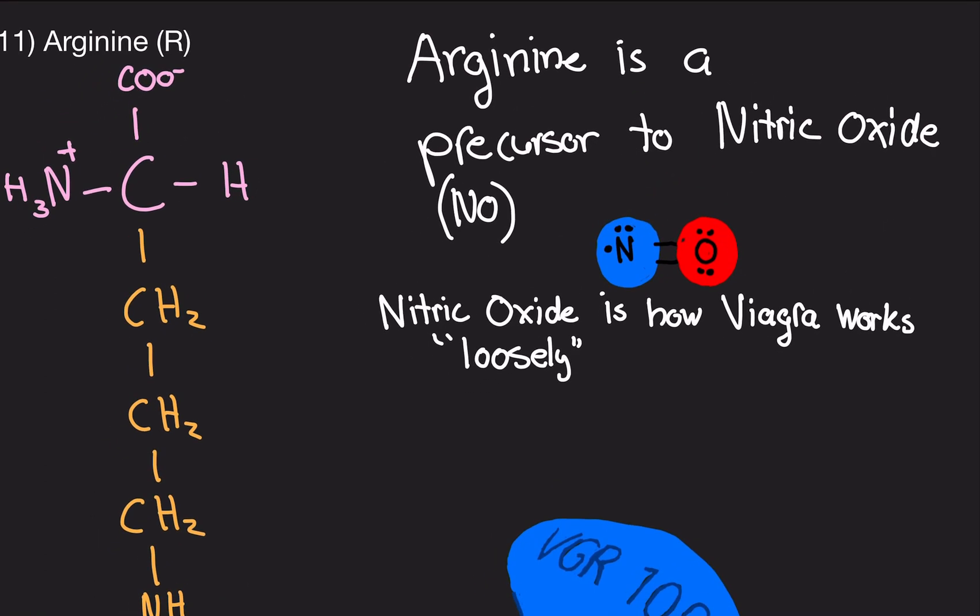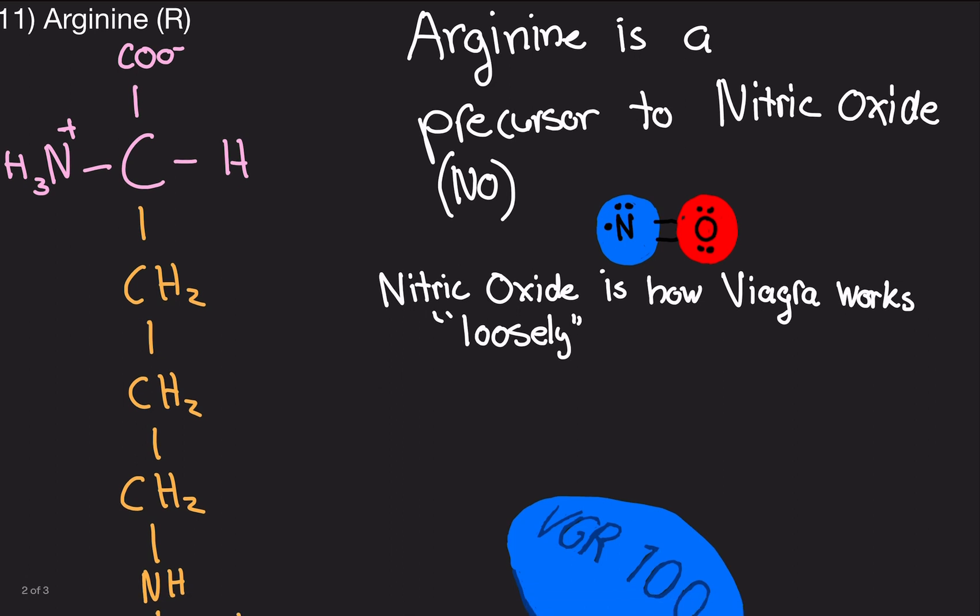So why are we talking about arginine? This is the whole Viagra thing I want to talk about. Let's back up for a second. There's something in your body called nitric oxide. This is not nitrous oxide. Nitrous oxide is what you put in cars to make it go faster, like in Fast and Furious. This is nitric oxide, different. To make nitric oxide in your body, you need arginine.